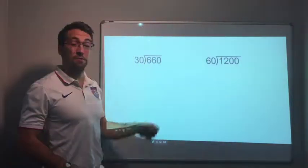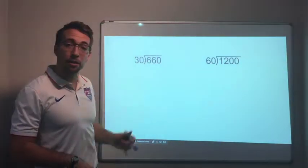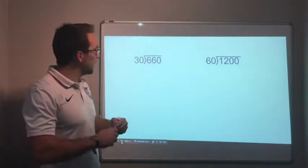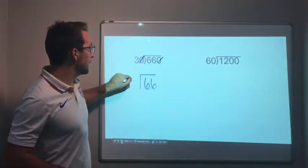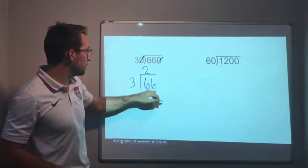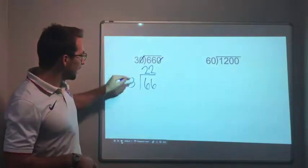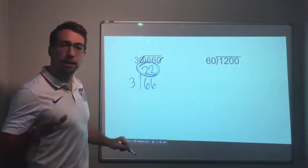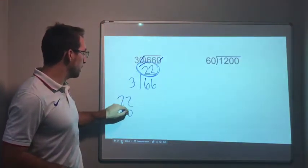This question actually came from a star exam: 660 divided by 30. How do we do that? Well, let's eliminate the zeros. 66 divided by 3 is what? 22. 3 goes into 6 two times, 3 goes into 6 two times. That's my answer, that is my final answer.